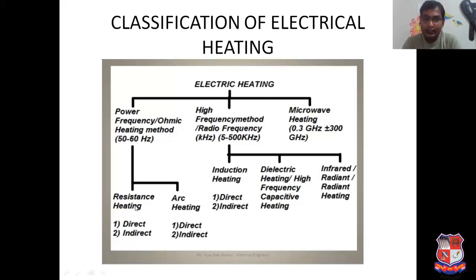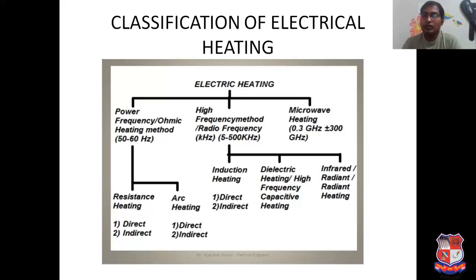Resistance heating is basically dependent on a very fundamental and significant effect of current. Whenever current passes through a resistance, there will always be generation of heat. The flowing electrons get collisions inside the conductor — electrons move through the conductor, getting energy from the supply, then colliding with atoms and losing their kinetic energy in the form of heat. Because of that, there will be generation of heat, which is known as resistance heating.